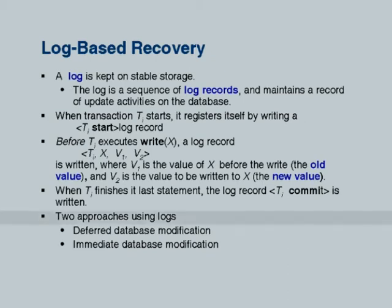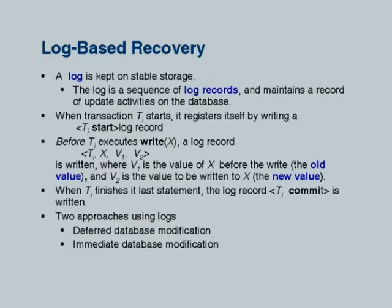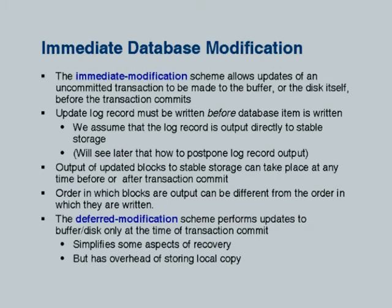There are two approaches for logging. One uses immediate database modification, which means at any point before the transaction commits it can update the database — that is the model we are using. There is another model where some concurrency control mechanisms collect all updates in local memory and do them only at the end when the transaction is ready to commit; that is called deferred database modification. We are going to focus only on immediate modification.